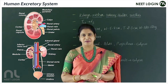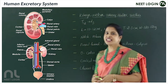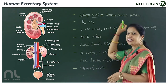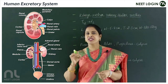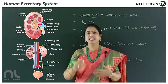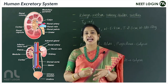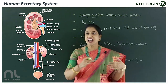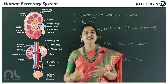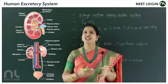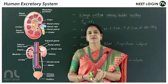The human excretory system includes a pair of kidneys, a pair of ureters, the urinary bladder, and the urethra. The branch of medicine which deals with the study of the anatomy, physiology, and pathology of the kidneys is called nephrology. A person having problems with their kidneys will consult a nephrologist, the specialist in nephrology.